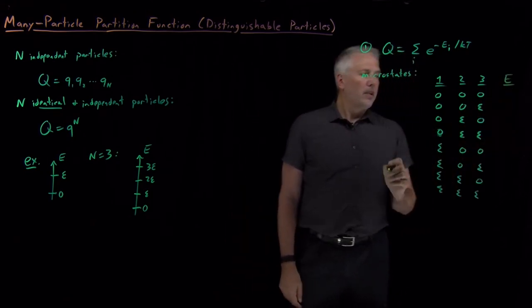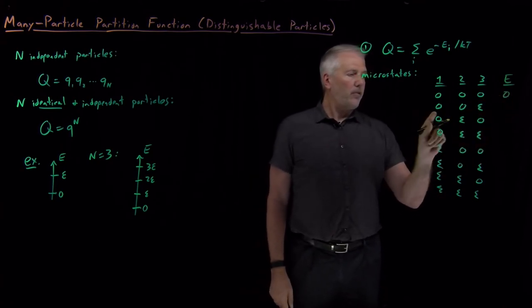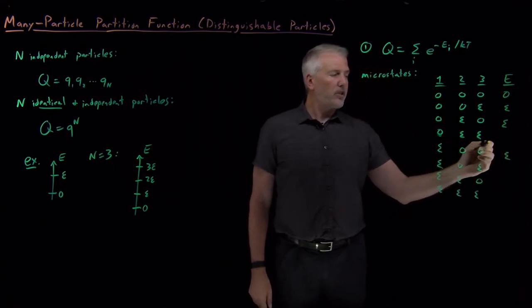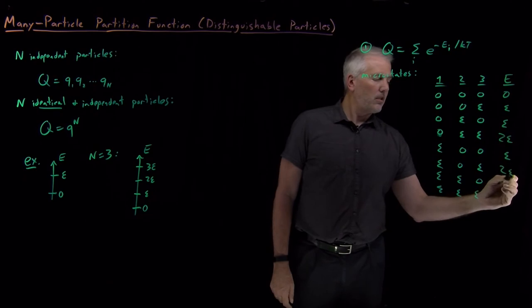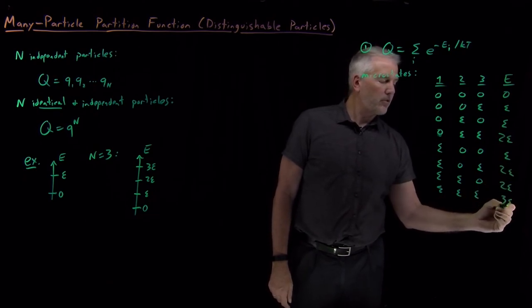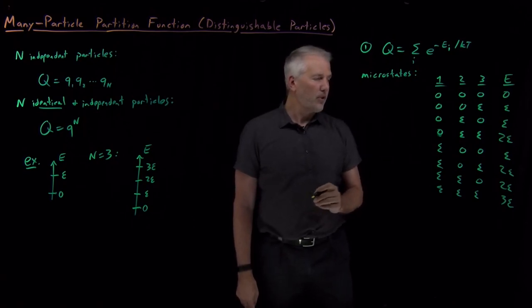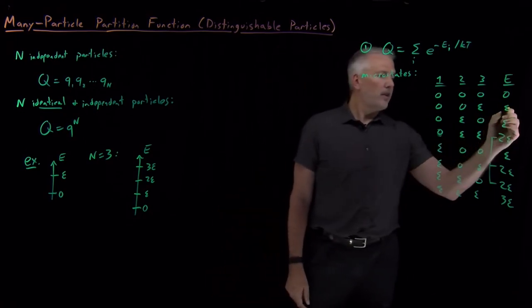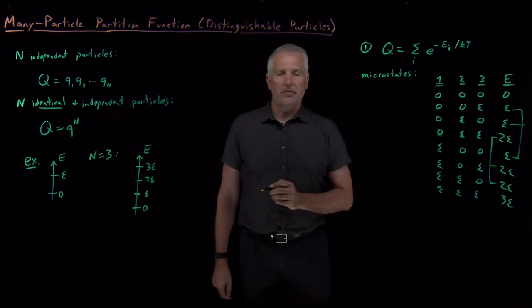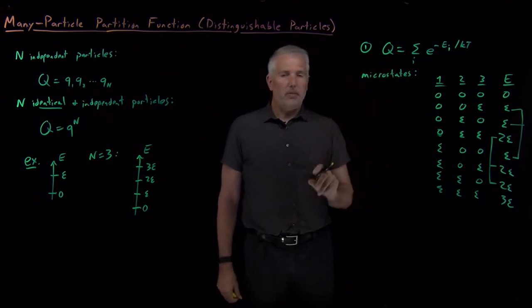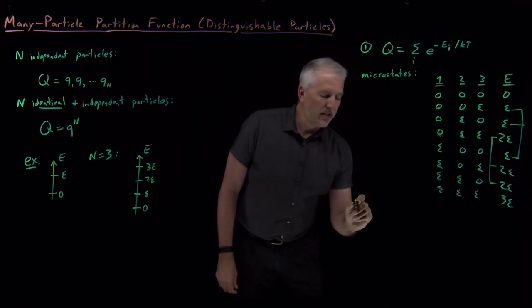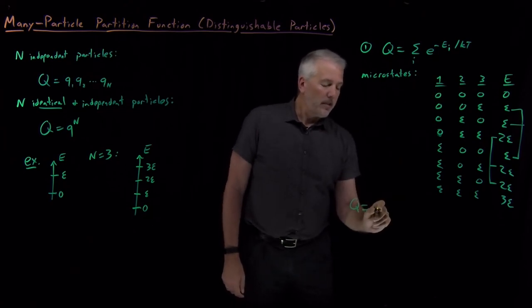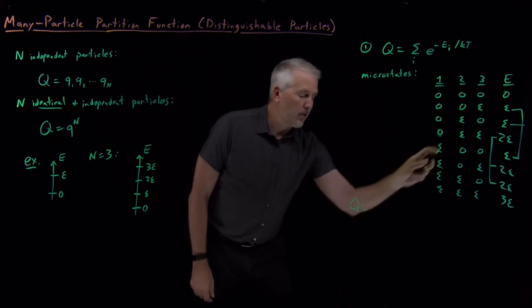The total energy of the system is zero if they're all in the ground state, epsilon if only one is excited, two epsilon if two molecules are excited, and three epsilon if all three are excited. Notice there's some degeneracy: there are three different ways to have an energy of two epsilon, and three different ways to have an energy of epsilon. So to calculate the partition function, we use the sum over energy levels of degeneracy times e to the minus energy over kT.